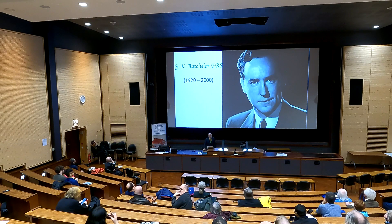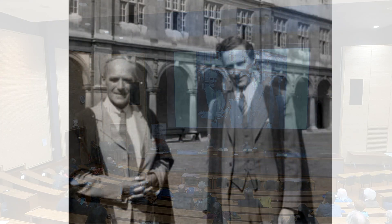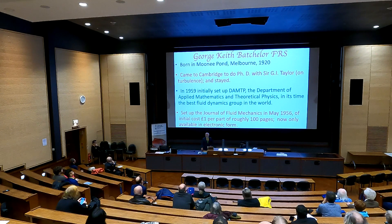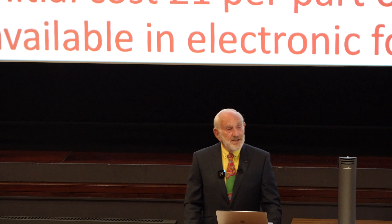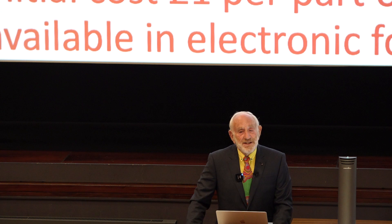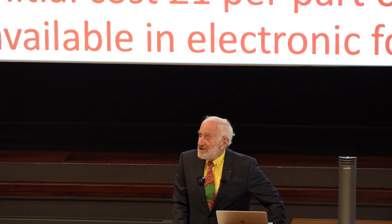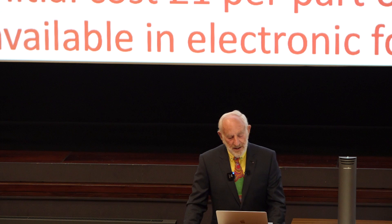I'd like to say a few words about G.K. Batchelor, GI's most famous student. This is George on his graduation day with GI Taylor, having done a PhD with him. George was born in Melbourne, came to Cambridge just at the end of the war to do a PhD with GI. He initially came for three years but stayed for the whole of his life, dying just a week or so after he turned 80. In 1959 he set up the Department of Applied Mathematics - a courageous thing to do - where people would work in a building with a laboratory downstairs. In its time, it was the best fluid dynamics group in the world.